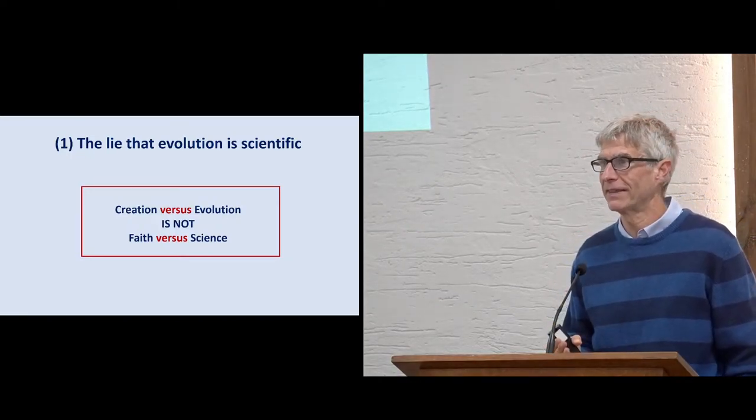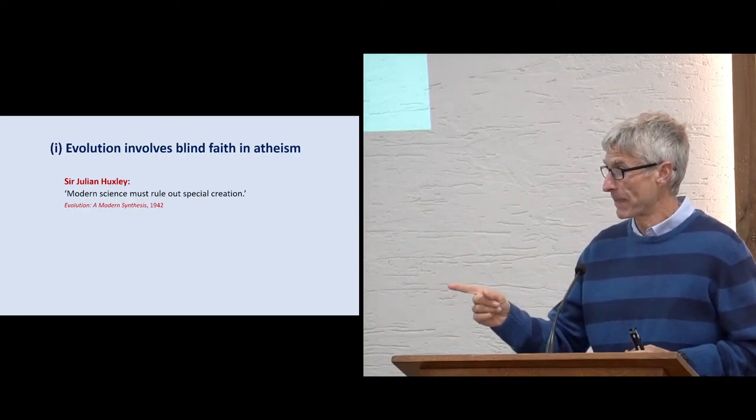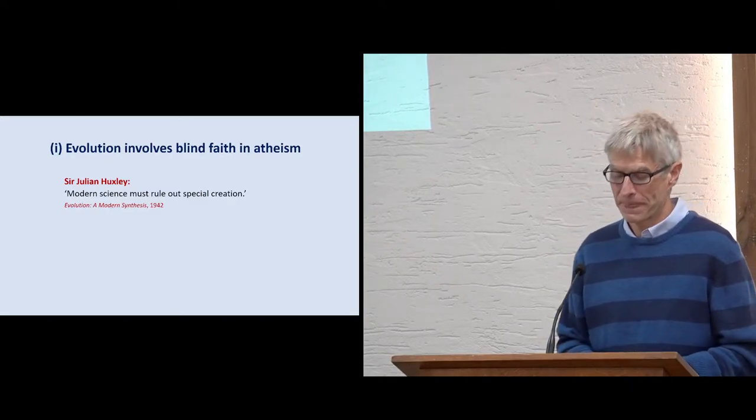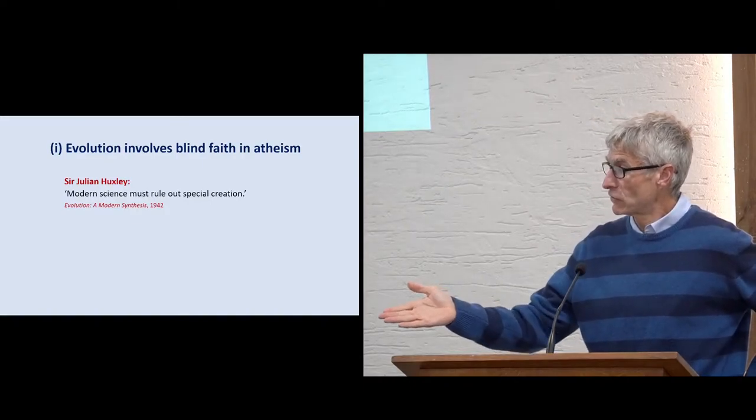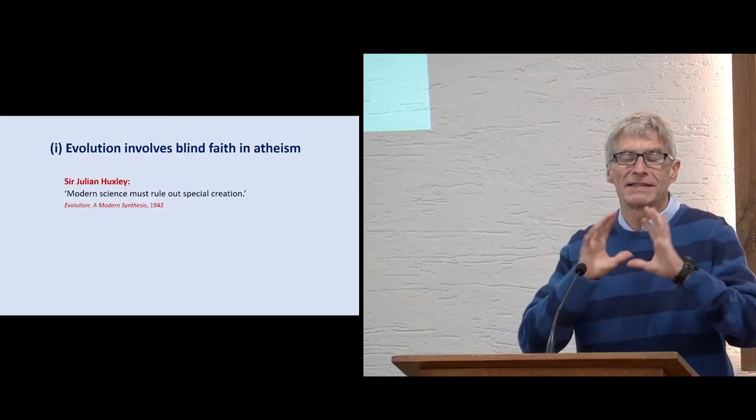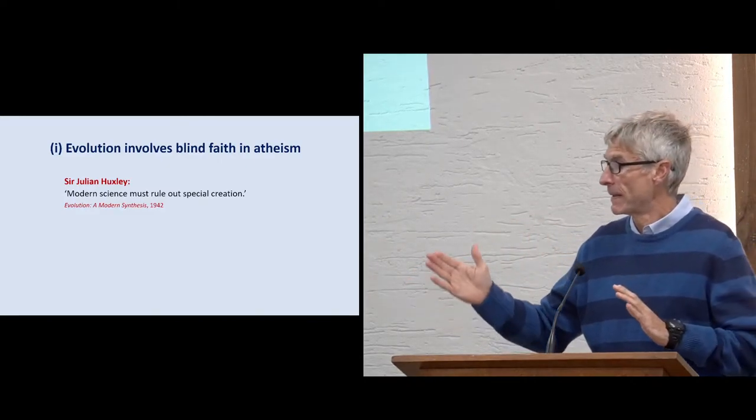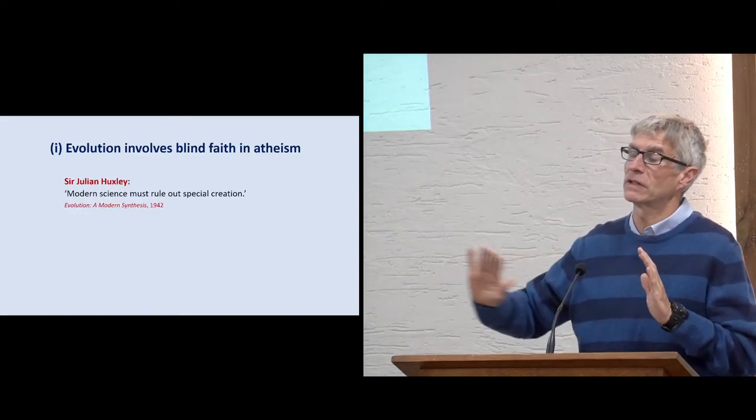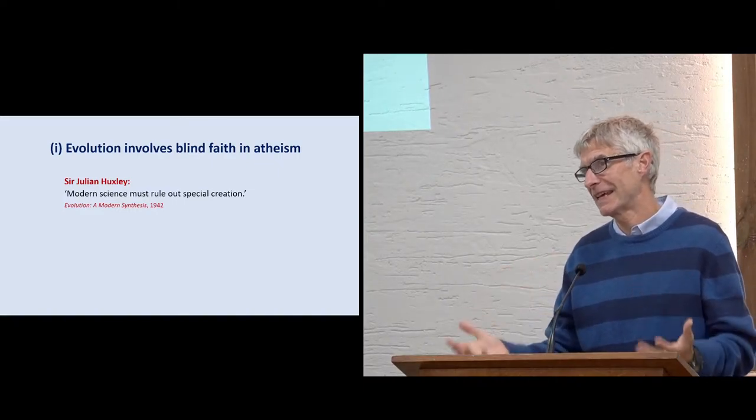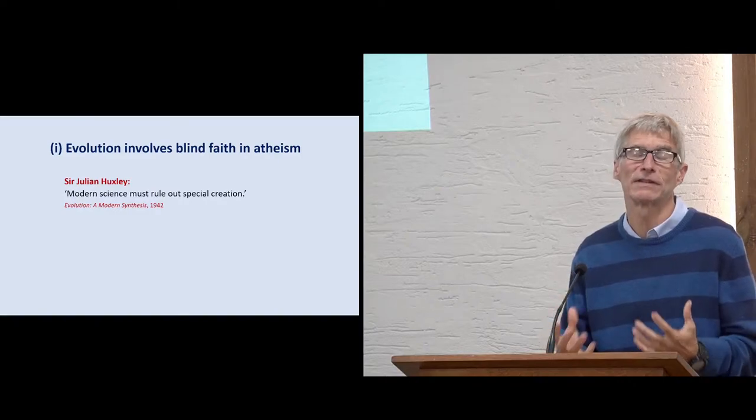Evolution involves blind faith in atheism. There are many things I could say, but I think a really key statement is from Sir Julian Huxley in 1942. He said modern science must rule out special creation. And it's such a key point because Sir Julian Huxley, who became a president of Humanists UK, he said to the scientific community, we must decide to push God out of science. There's no justification for doing that. It's an anti-science thing to do. But in the 1940s, this is what modern science did. They pushed God out of science. They basically said we can only believe in humanist, secular, naturalistic views of origins. It was not based on evidence. It was based on a decision, a decision to become humanist.